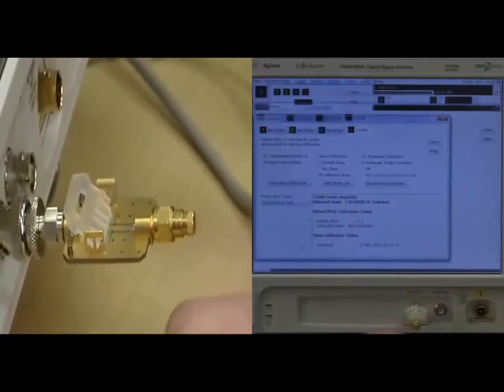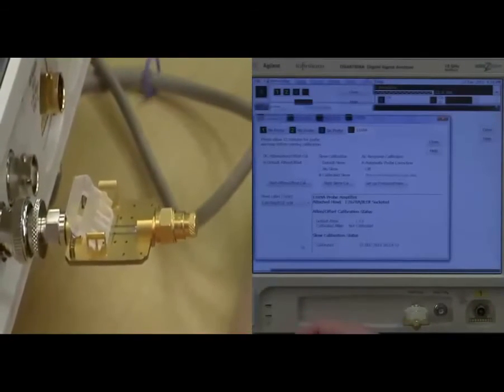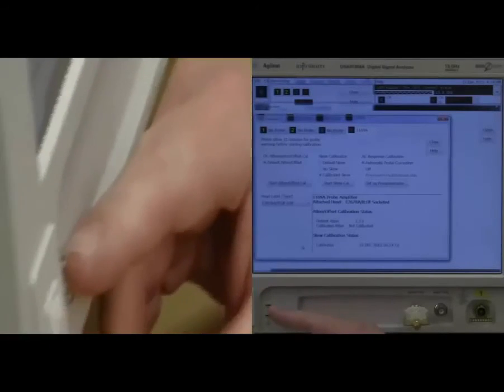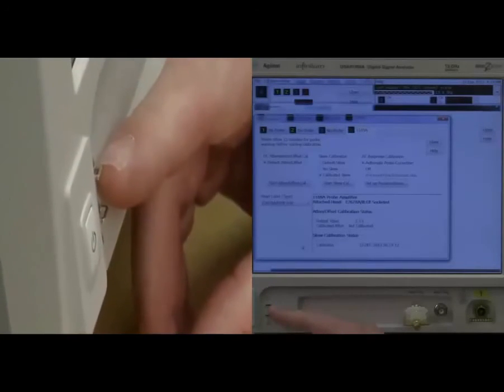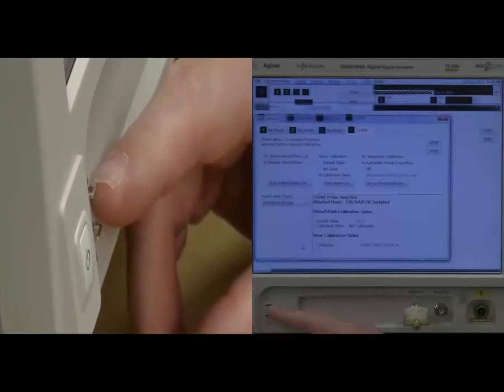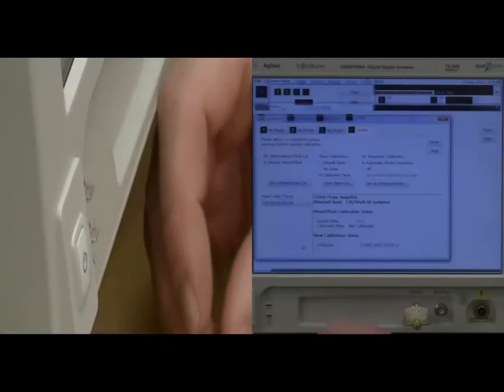It's also worth noting that we can also, for just the offset and DC gain, just touch the positive sides of the probe compensation lug. However, this is no good for doing the skew calibration. Thank you for your attention.